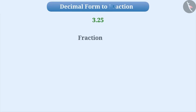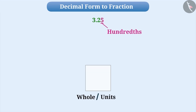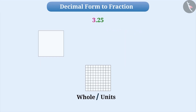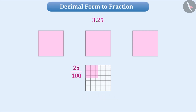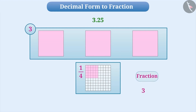Let us now learn about conversion from decimal form into fraction. Assume we need to express 3.25 in fraction form. We will consider one whole square divided into 100 equal parts. To represent three, we take three squares and shade all the parts. To represent twenty-five hundredths, we shade twenty-five parts out of hundred, expressed as twenty-five by hundred. This shaded part is one-fourth of the whole, so we write one by four in place of twenty-five by hundred. Therefore, three whole and one-fourth parts are written as 3 and one by four — the fractional form of 3.25.